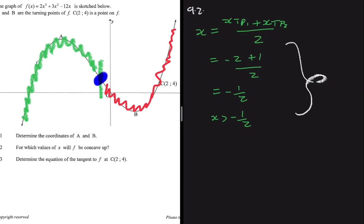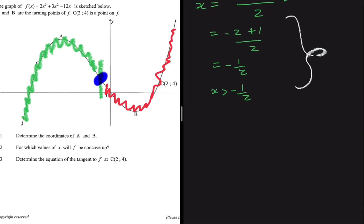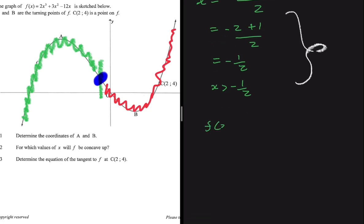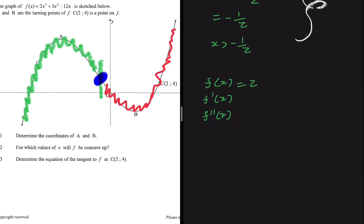Let me show you the second method, because in an exam you may need to use either one. We started with f(x), differentiated to get f′(x), and we can go a step further and find the second derivative. If we find the second derivative and equate it to zero, the x-value we find is the x-value at the point of inflection. So: f(x) = 2x³ + 3x² − 12x, f′(x) = 6x² + 6x − 12, and the second derivative f″(x) = 12x + 6.